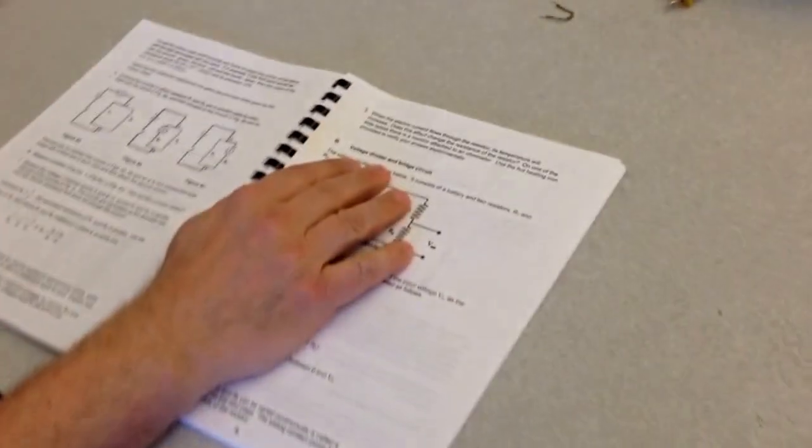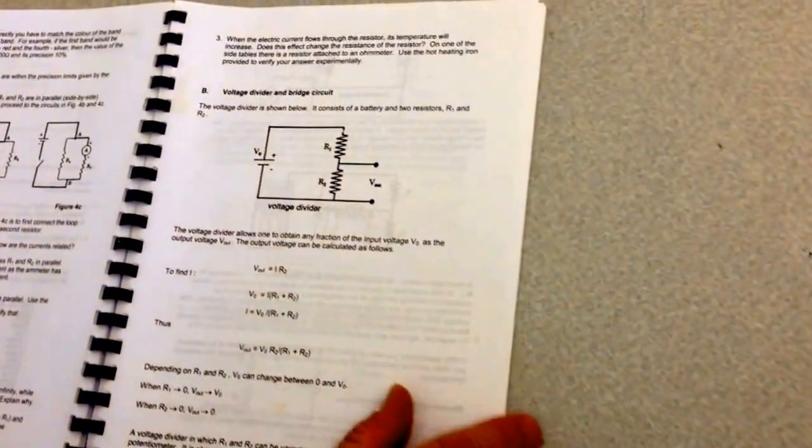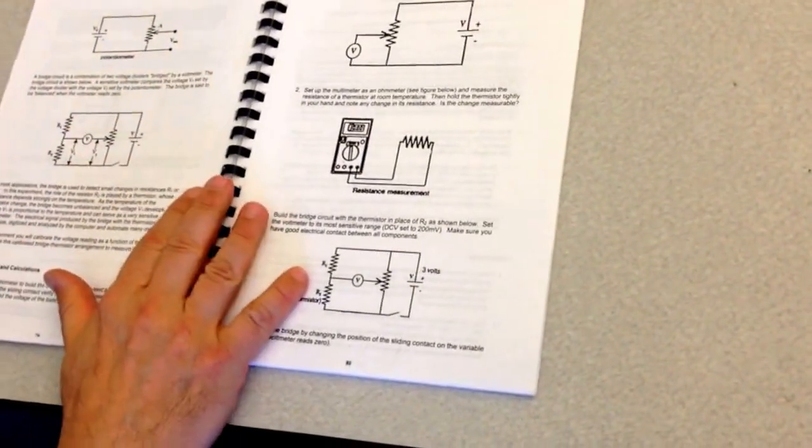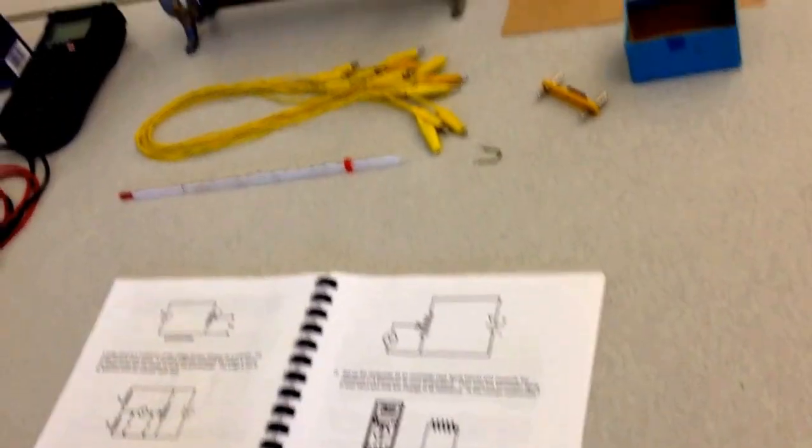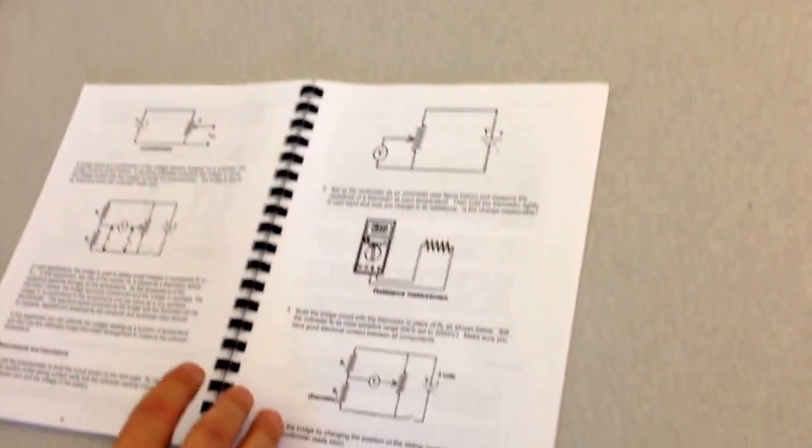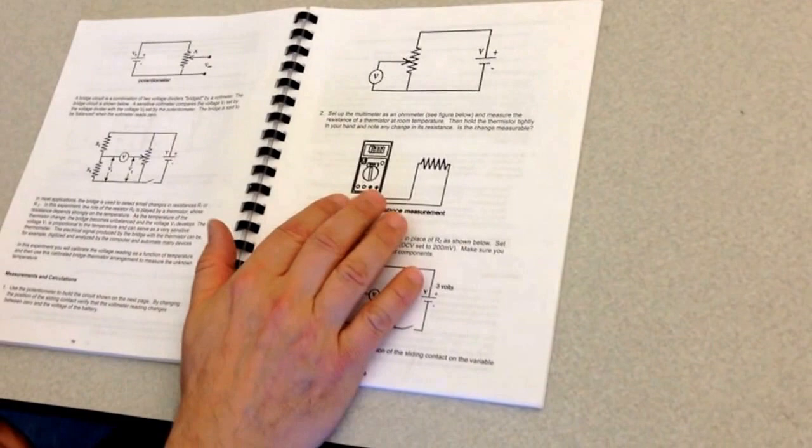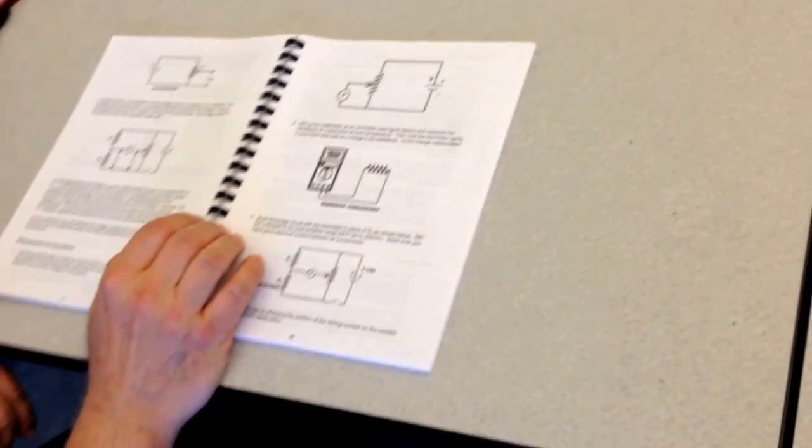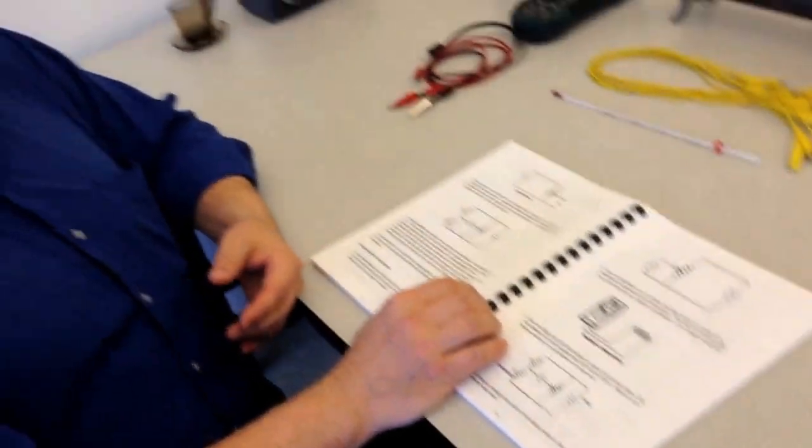Now, we are going to be doing part B. Part B is called the voltage divider and bridge circuit. This experiment is very similar to what you've done before in terms of how to connect things and how to take measurements using a multimeter. But this time, we are going to be introduced to two new components that you haven't used before.